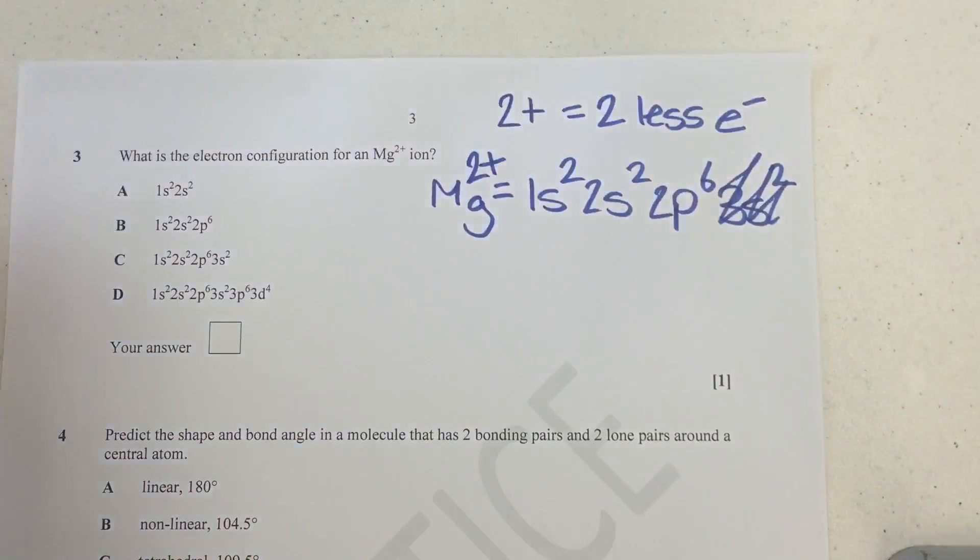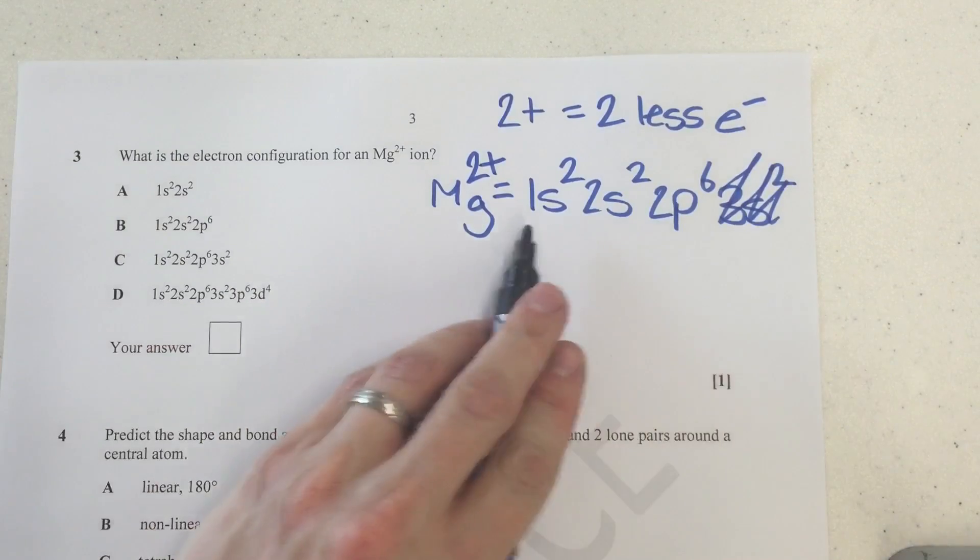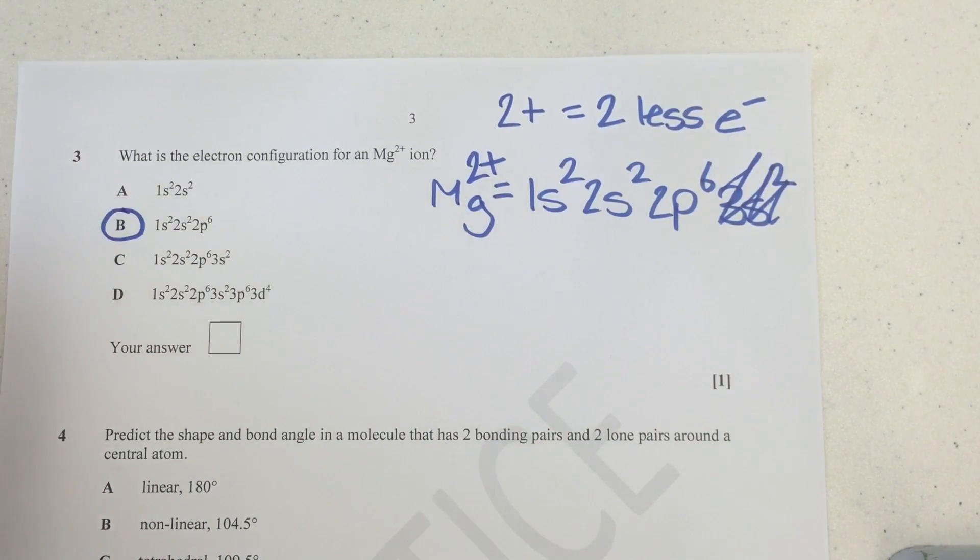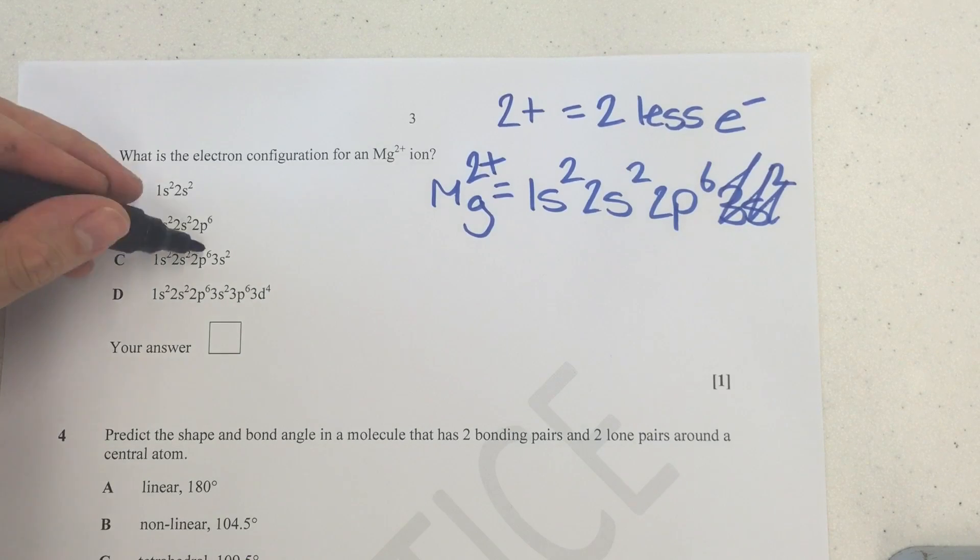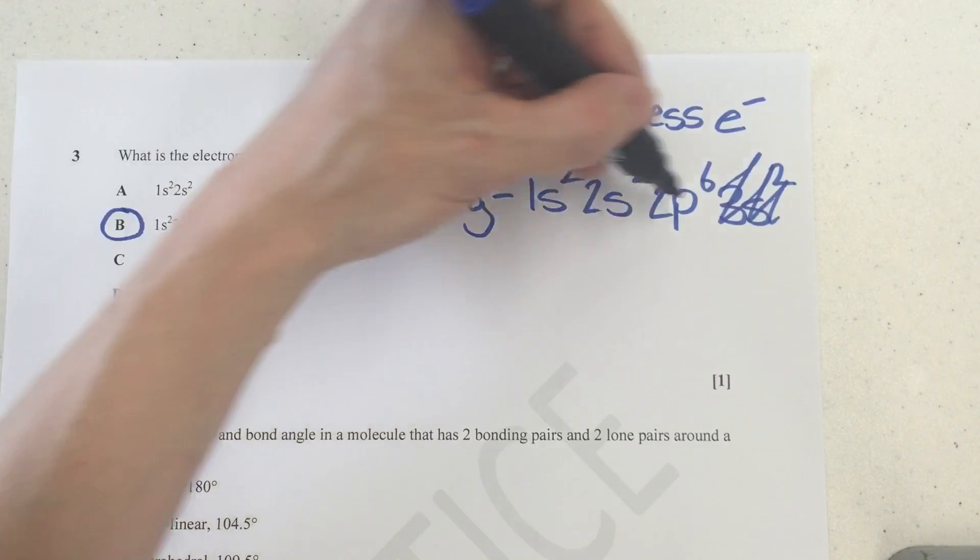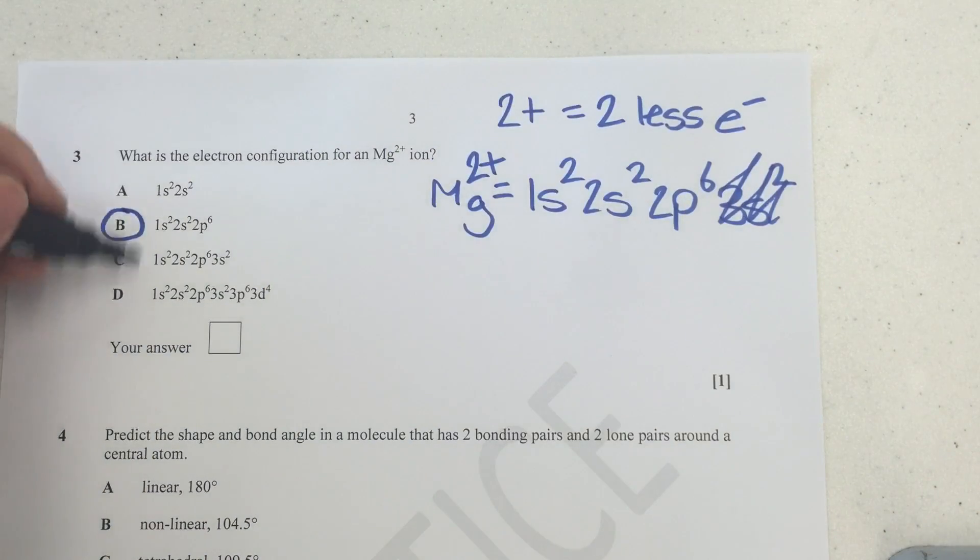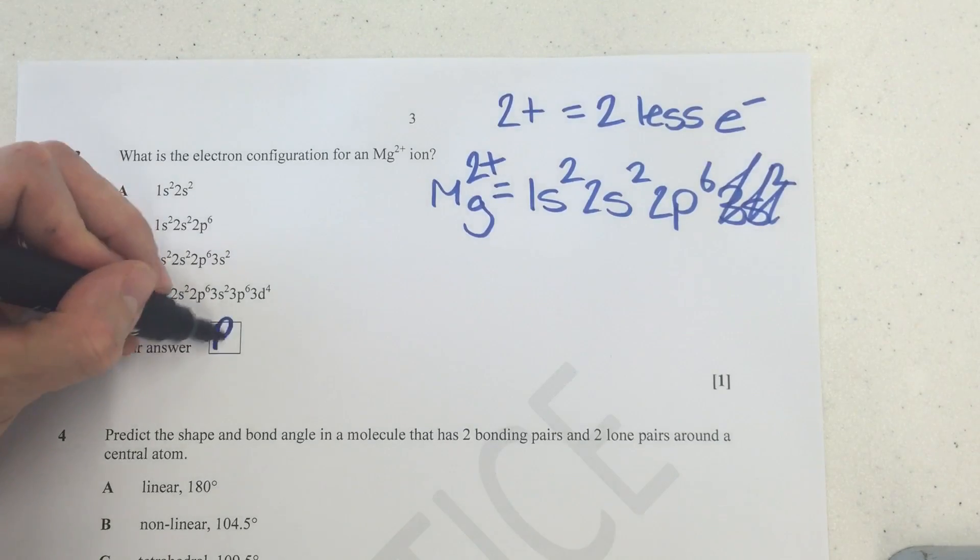Now, if you take away and make this magnesium 2+, then of course you're getting rid of this 3s2. So what you're left with is the answer we can very easily see here, which is B. We can see that C, actually, is the electron configuration for normal magnesium. That's what we had here originally. And the others are just a bit random. So the correct answer here is absolutely B.